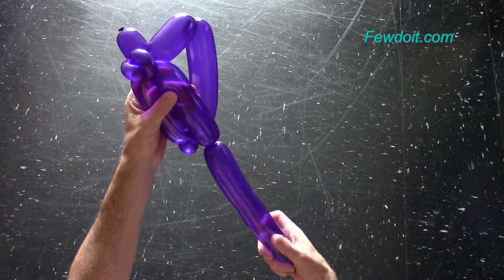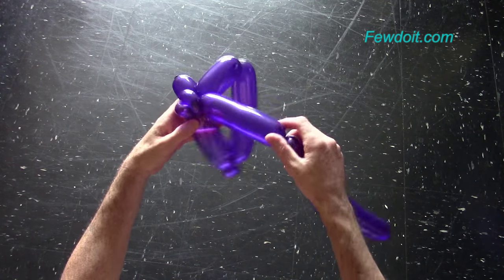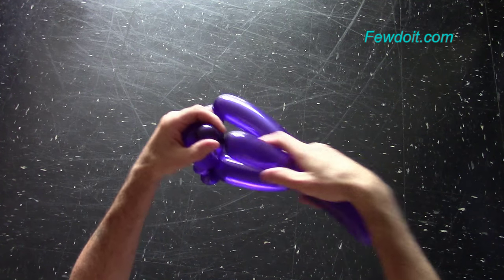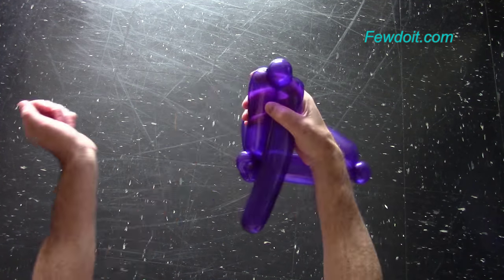Twist the eighth bubble. Make it the same size as the fourth bubble. Twist the ninth soft about 3 cm long bubble. Lock both ends of the ninth bubble in one lock twist.